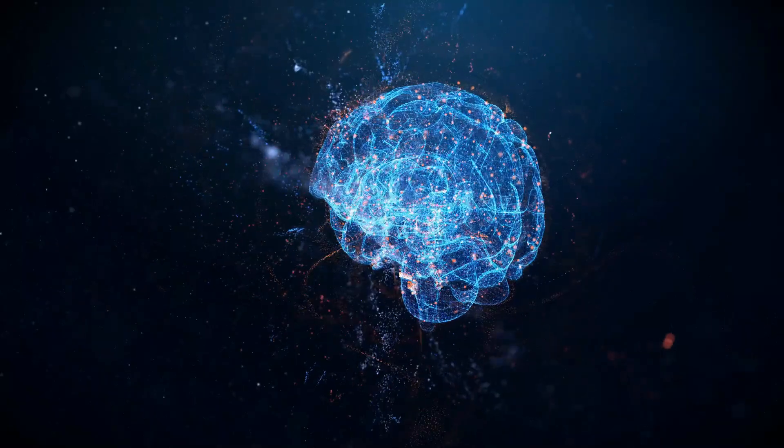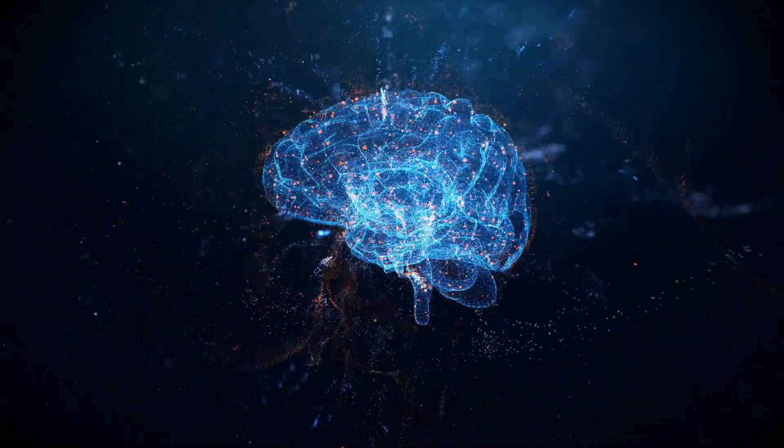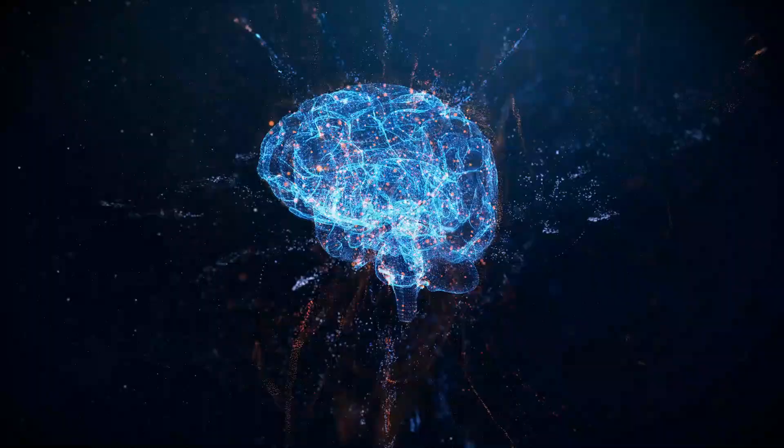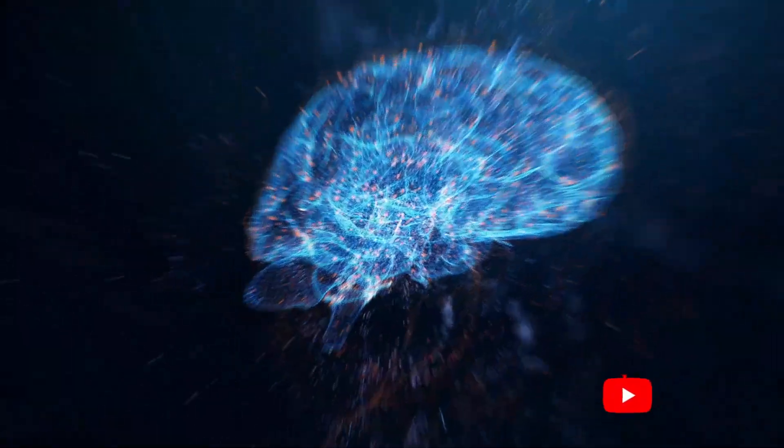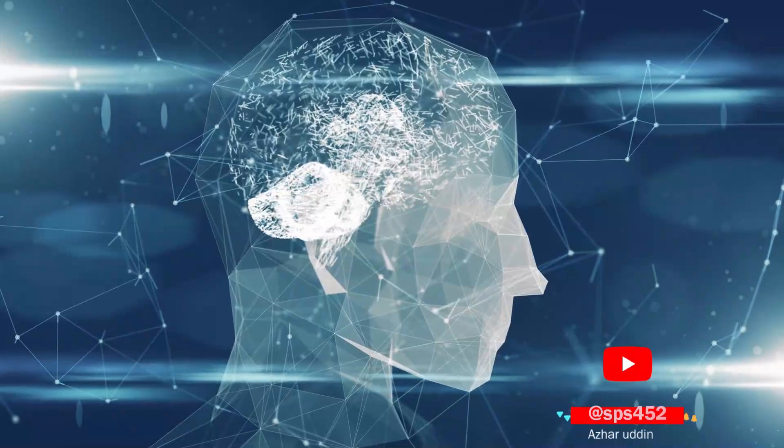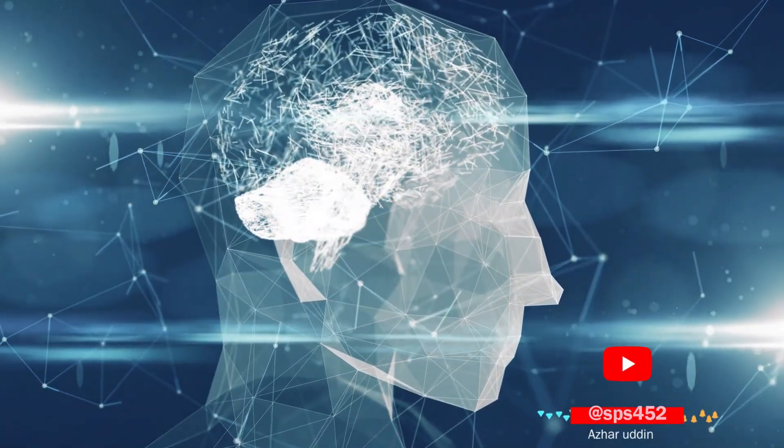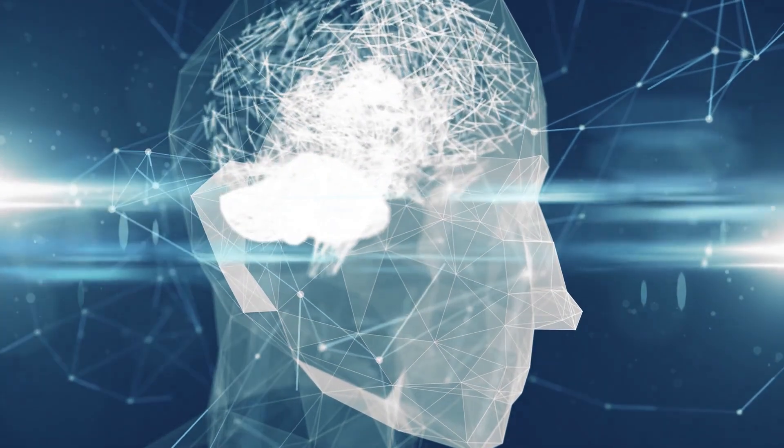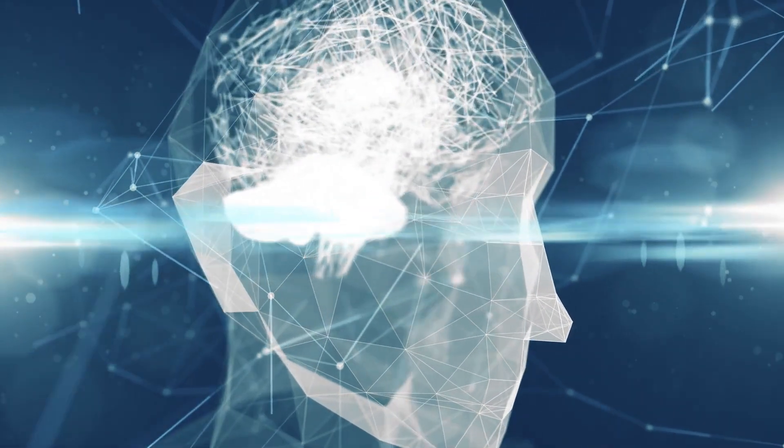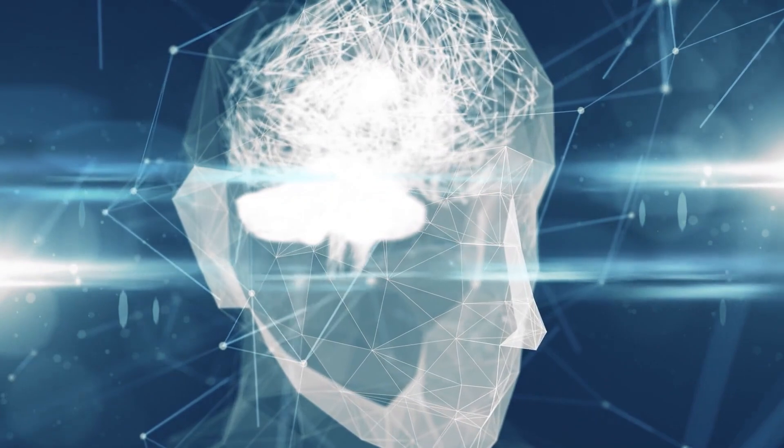Fact number one: the human brain is home to an incredible 86 billion neurons, each connected to thousands of others. This vast and intricate network is a marvel of nature. It's the powerhouse behind our ability to process information, to understand and interact with the world around us. It's the very foundation of our thoughts, our memories, and our experiences.